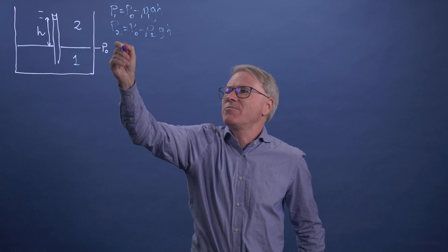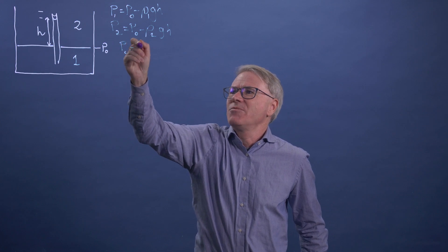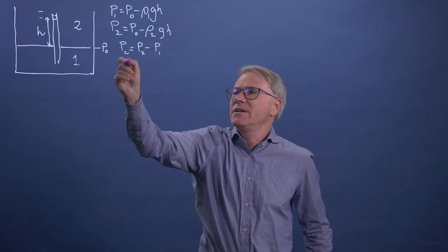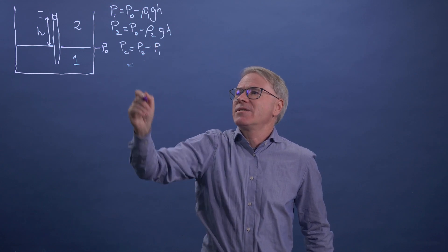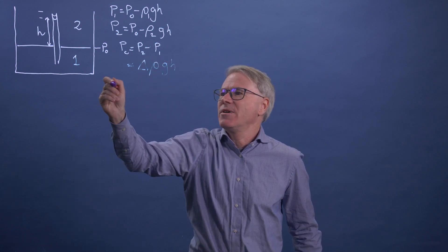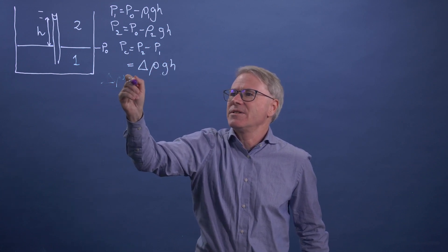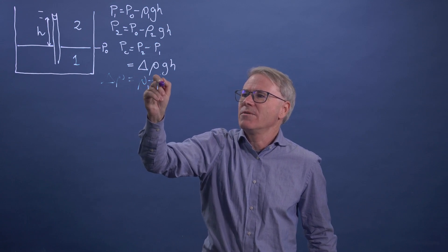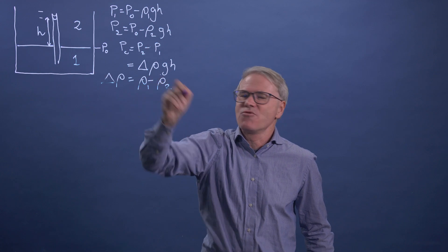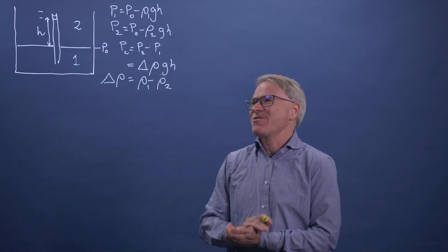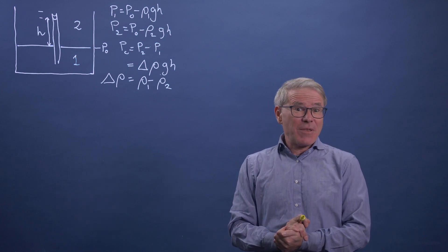If we go up H, then the pressure P1 is P0 minus rho one, that's the density GH. P2 is P0 minus rho two GH. And so my capillary pressure PC, which if you remember, is P2 minus P1, is, we can write that as delta rho GH, where delta rho is the difference in density. So it's rho one minus rho two. And that's a Greek rho, not some stranger P. So we know that's the capillary pressure.